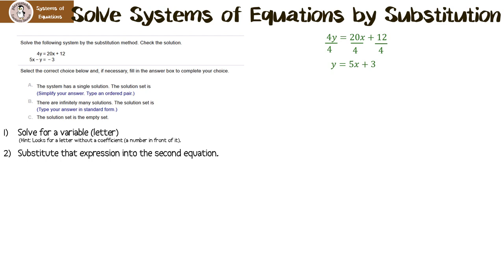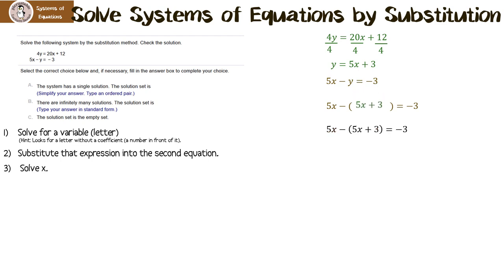The next thing we have to do is substitute that expression into the second equation. I'm going to leave a big space where the y is because y equals 5x plus 3, and put that right in there. Now we're going to solve for x — we need to distribute. The 5x comes down, then negative 1 times 5x is negative 5x, and negative 1 times 3 is negative 3. Collecting like terms: 5x minus 5x is 0x. That doesn't quite work out.